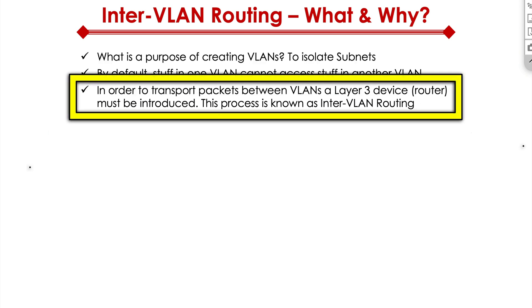If that is the case, then how do we allow two different devices that are part of two different VLANs to talk to each other? We have to introduce a Layer 3 device in the middle. That's what's called inter-VLAN routing.